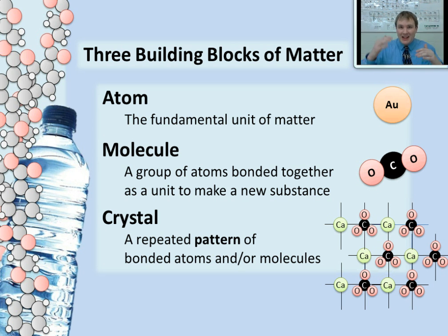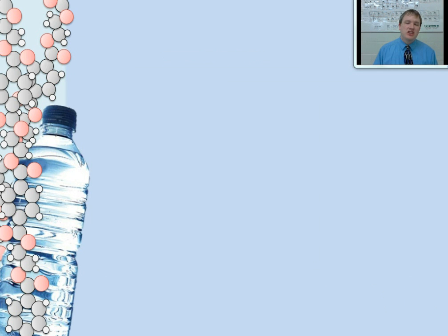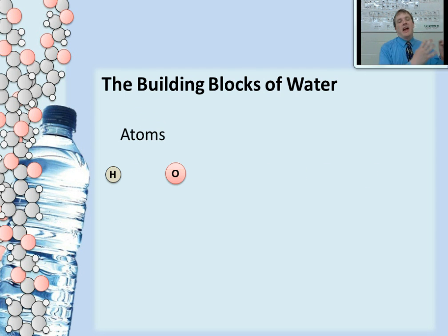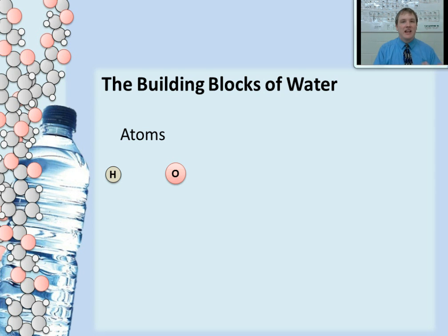It's a lot to take in, but as we learn throughout this unit, we're going to keep coming back to these three building blocks of matter. Right now, let's take a look at how one substance can actually represent all three building blocks of matter — and that substance is a very familiar one: water. Water, at its very basic level, is made up of atoms — atoms of hydrogen and atoms of oxygen. But hydrogen and oxygen all by themselves don't actually make up water. To have water, we have to bond those hydrogens and oxygens together — specifically, two hydrogens bonded to one oxygen as a molecule to make water.